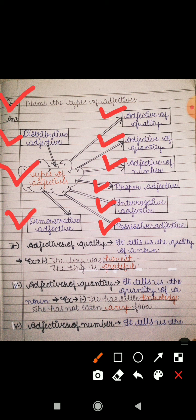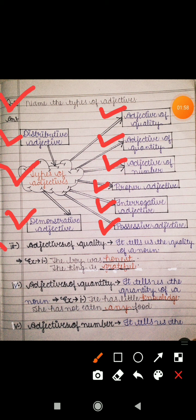Now we will do the definition of each type of adjective. The third definition is of adjective of quality. It tells us the quality of a noun. Adjective of quality hamein ek noun aur pronoun ki quality batata hai — visheshta batata hai. Example: 'The boy was honest' — ladka kaisa tha? Honest tha, that is a quality of a boy. 'The king is grateful' — king kaisa hai? Grateful hai.